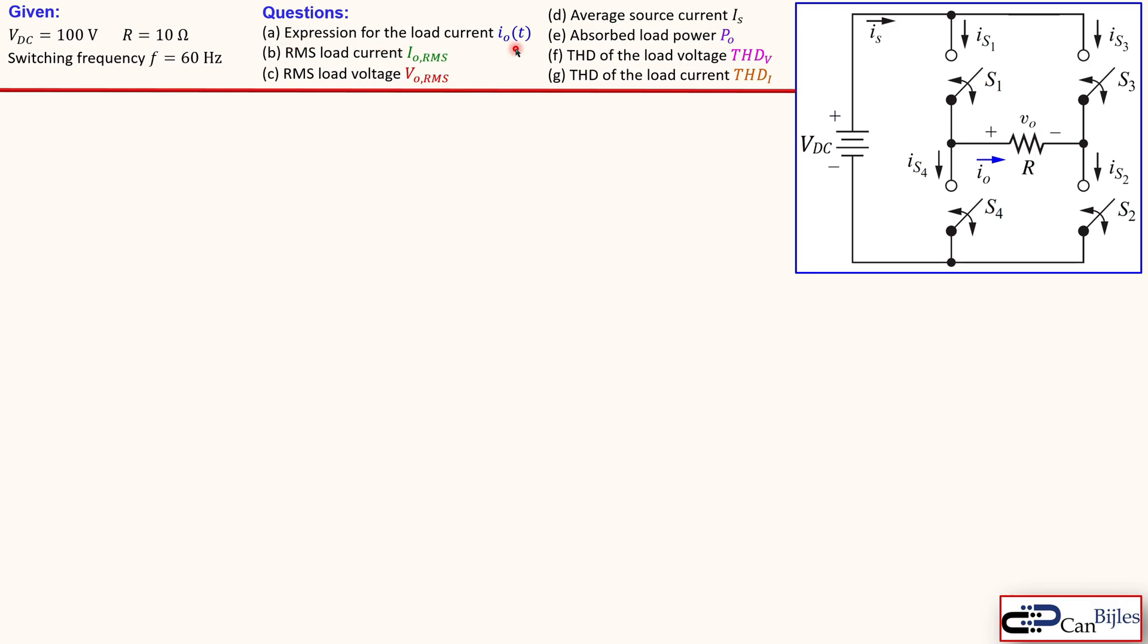We have an expression for the load current we need to determine. Also the load current, load voltage and the average source current, absorbed load power, THD for the load voltage and THD for the load current. THD stands for total harmonic distortion which is an important parameter to reflect the quality of our AC signal in the output.